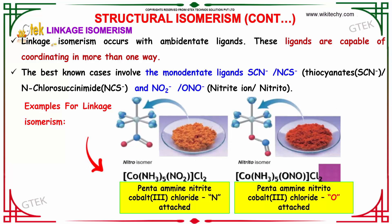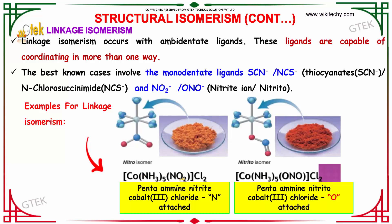Here is linkage isomerism. Linkage isomerism occurs with ambidentate ligands, which are capable of coordinating in more than one way. The best known cases involve the monodentate ligands SCN becoming NCS (thiocyanate to isothiocyanate), or NO2 becoming ONO (nitro to nitrito). Example: pentaaminenitrido-cobalt(III) chloride versus pentaaminenitrito-cobalt(III) chloride — O is attached in one case and N is attached in the other.